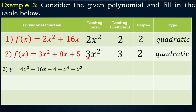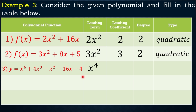For example 3, y = 4x³ − 16x − 4 + x⁴ − x². Arrange in standard form: y = x⁴ + 4x³ − x² − 16x − 4. The leading term is x⁴, the leading coefficient is 1 (since no number is written, the coefficient is 1), and the degree is 4.